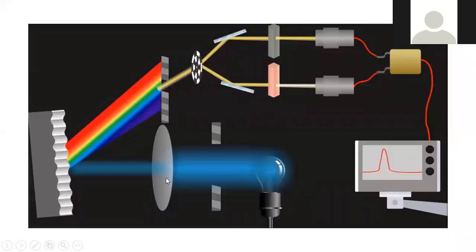Combining these four things gives you the monochromator. Then you have the chopper, then the mirror, then the reference and sample container — we call it the cuvette — which holds the reference and sample solution, also called the sample holder. After that, we have two detectors, then the amplifier, and then the recording device. Now we will explain the instrumentation of all these things.